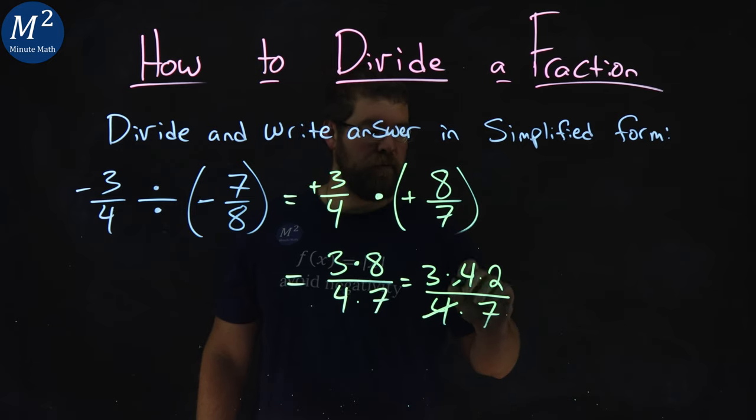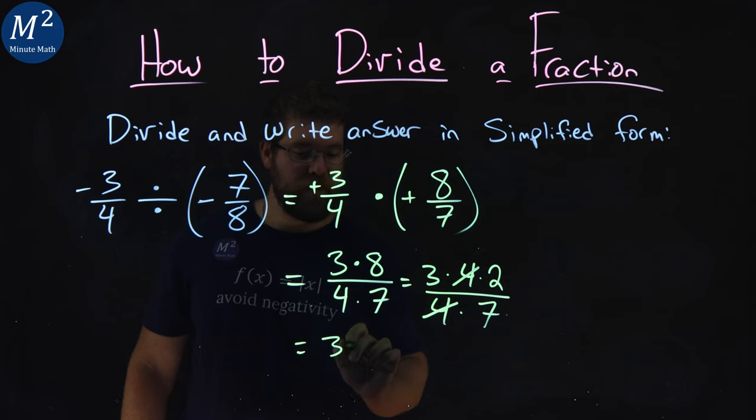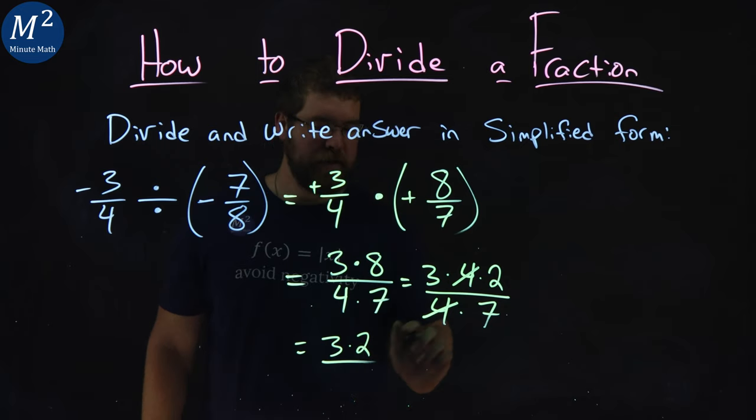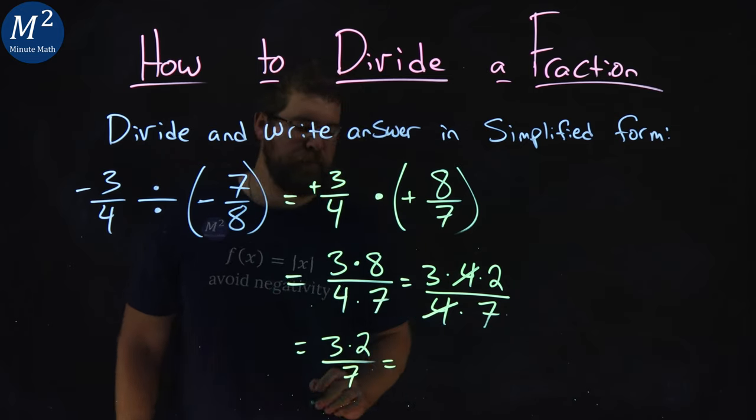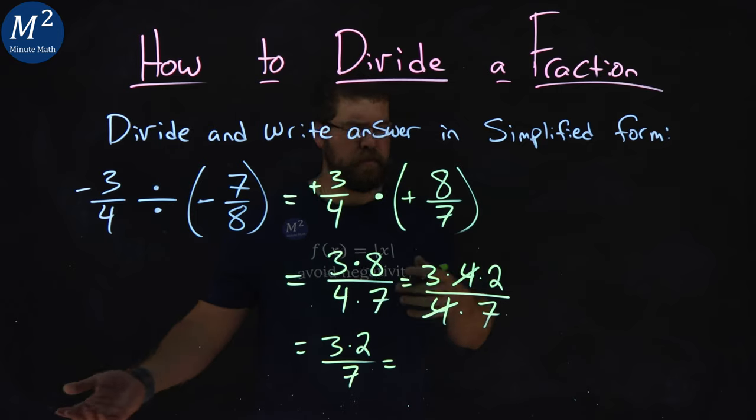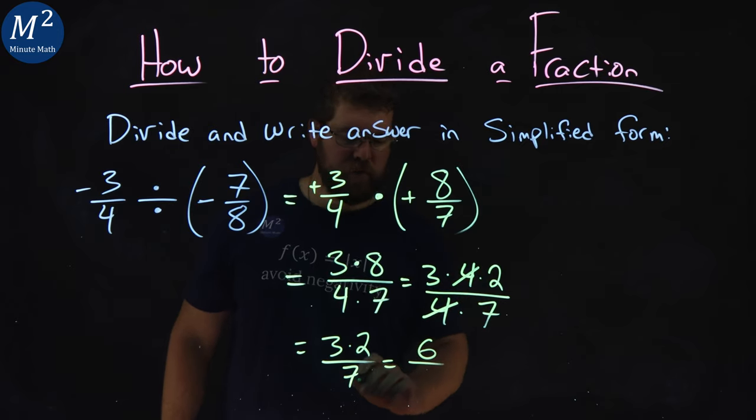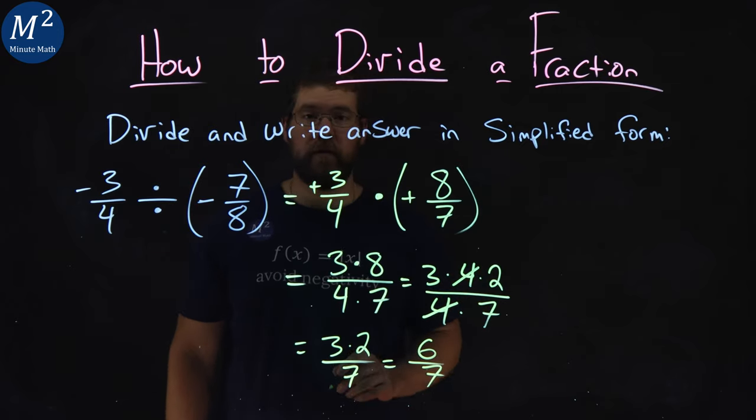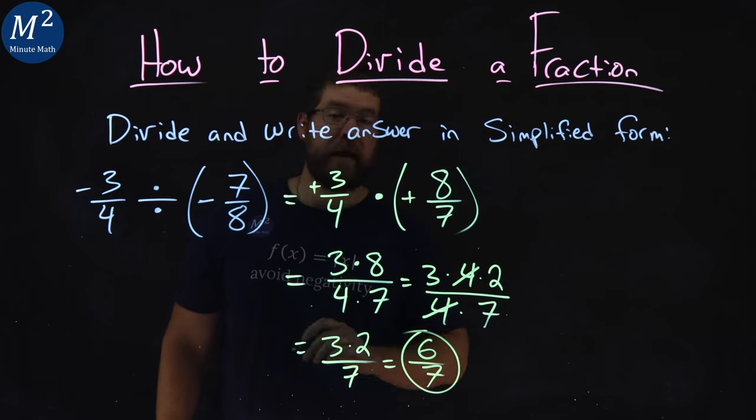The fours cancel right here, leaving me with three times two in the numerator and seven in the denominator. Now, three times two simplifies to six over seven, which is left over in the denominator, and there we have it.